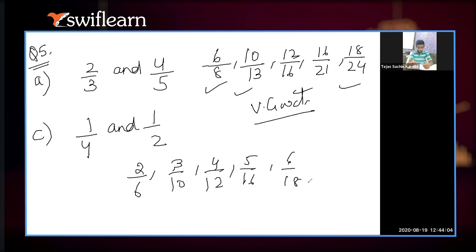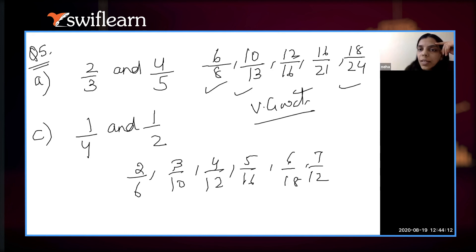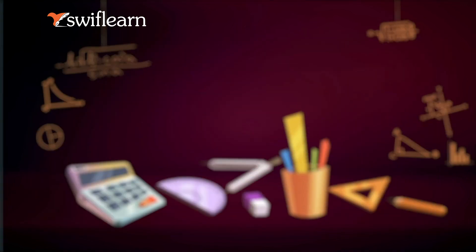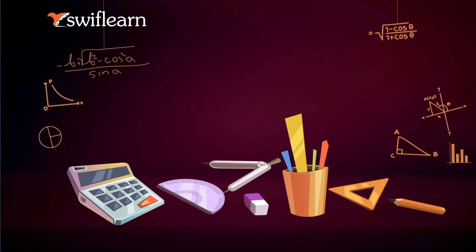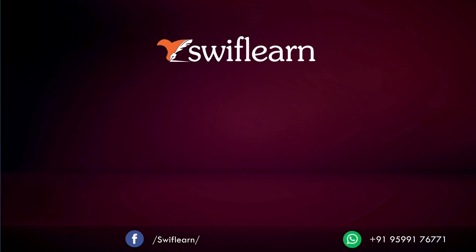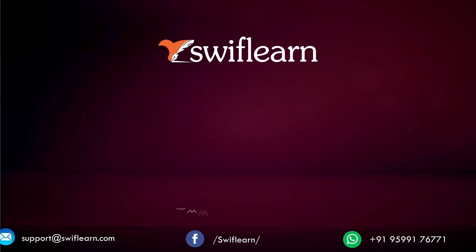Or 1 upon 4 plus 6 upon 18 is equal to 7 upon 12. That's correct. Good, very good. So is this thing clear — how to find out the rational number between two rational numbers? 1 upon 5 and 6 upon 16. That's correct. Good.